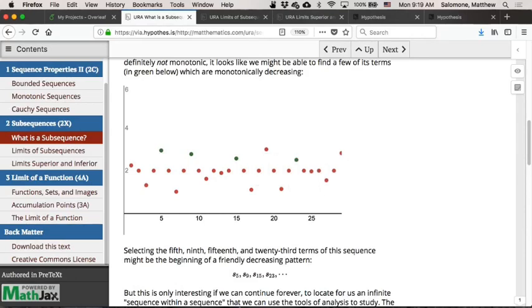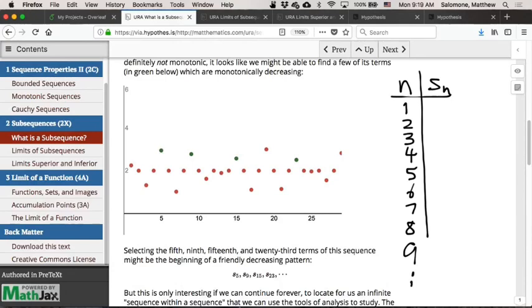So in this example, I guess how I like to think of it is this. If my original sequence can be written in a data table, SN, so here's the first term, here's the second term, term number four, term number five, term number six, term number seven, term number eight, term number nine, and so on and so on.